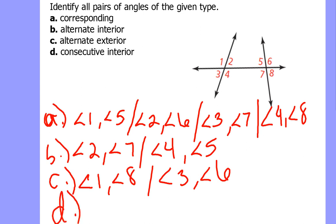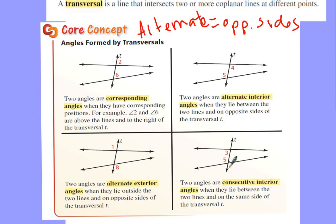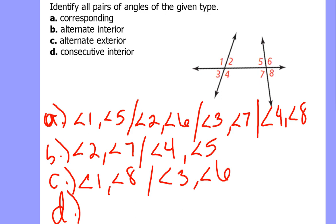The last one I call the forgotten soul — consecutive interior angles. 'Consecutive' means same side of the transversal, and 'interior' still means in between the two lines being cut. So the pairs of consecutive interior angles are angle 2 and angle 5, and angle 4 and angle 7.